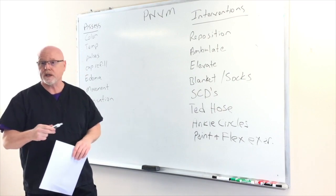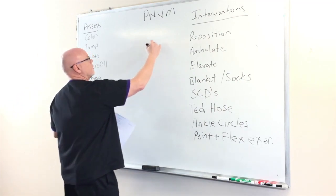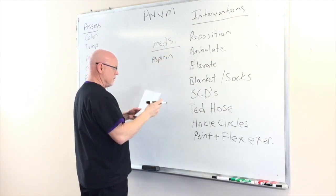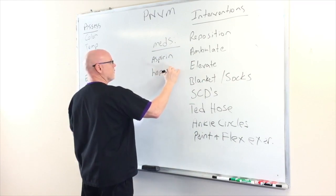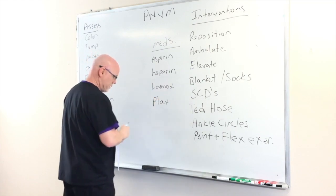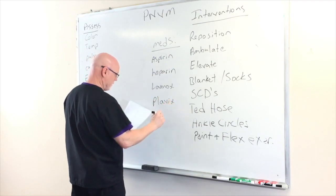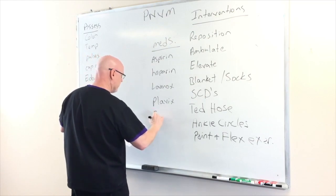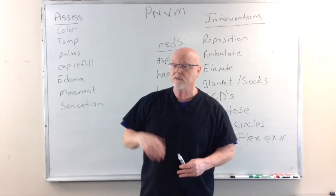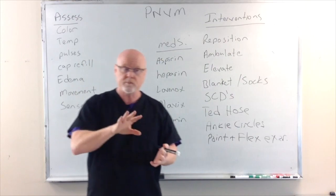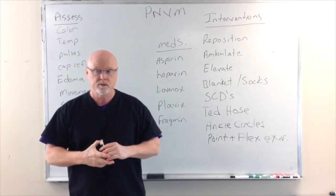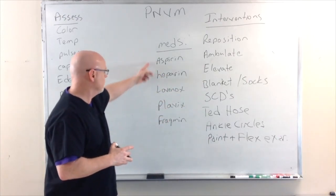The last intervention is medications. Medications that can help increase blood flow include aspirin, Plavix, heparin, Lovenox, and Fragmin. These are all medications you can give as an intervention — but they have to be assigned to you; you can't just pick them. These are the things you can do for peripheral neurovascular management.